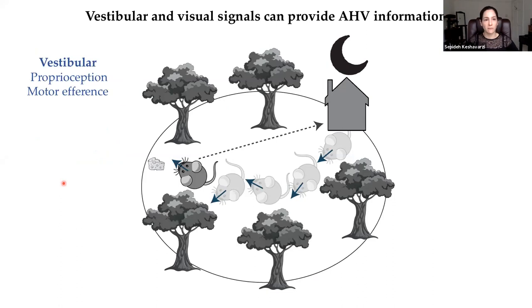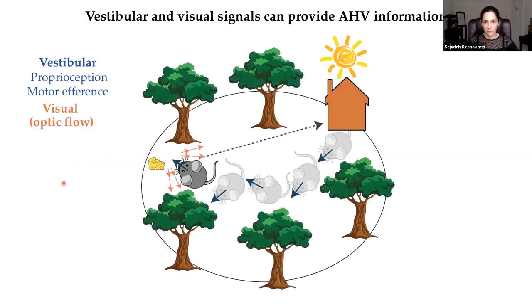This AHV information can be obtained from a couple of sources. For example, when there is no visual input available, it can be obtained from vestibular inputs or proprioception and motor efference. And also, when vision is available, optic flow can be another source. Now, despite many works on head direction cells and other spatially tuned cells, still little is known about the computation underlying this AHV coding, particularly in higher order cortical regions of the head direction network in the mammalian brain. It's not very clear which of these sensory signals are the major contributor to AHV coding, and what is the role of the other inputs.